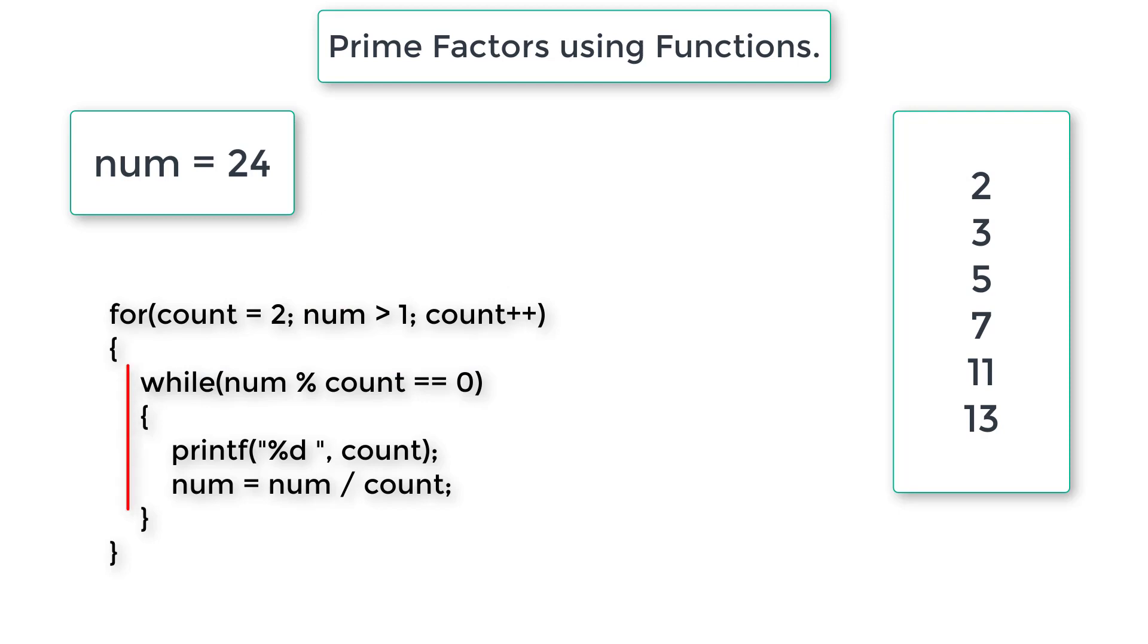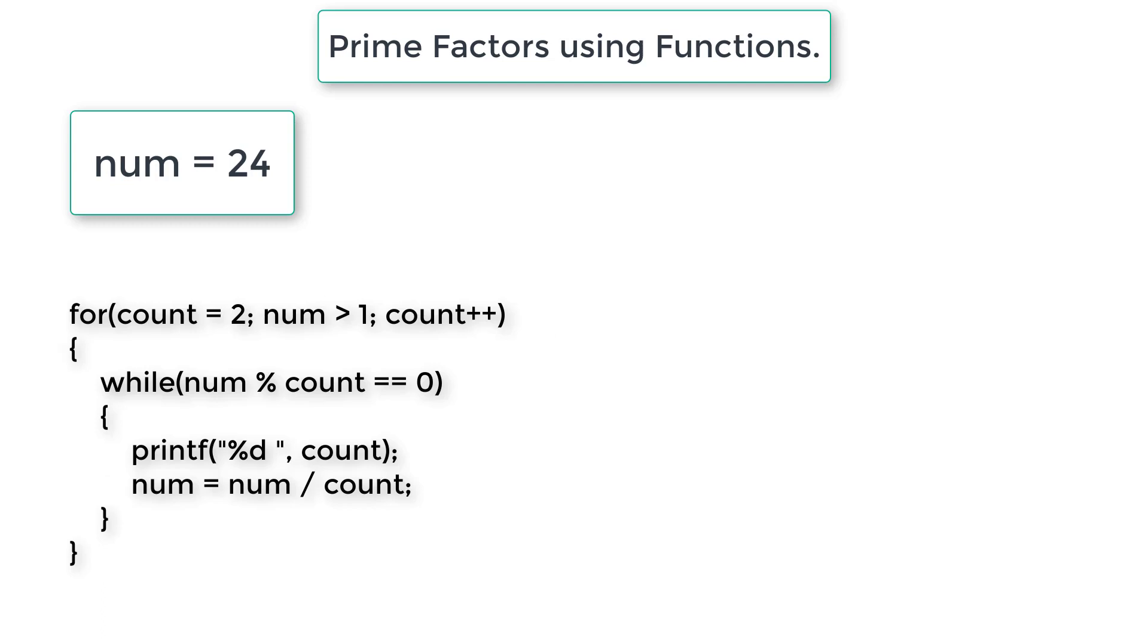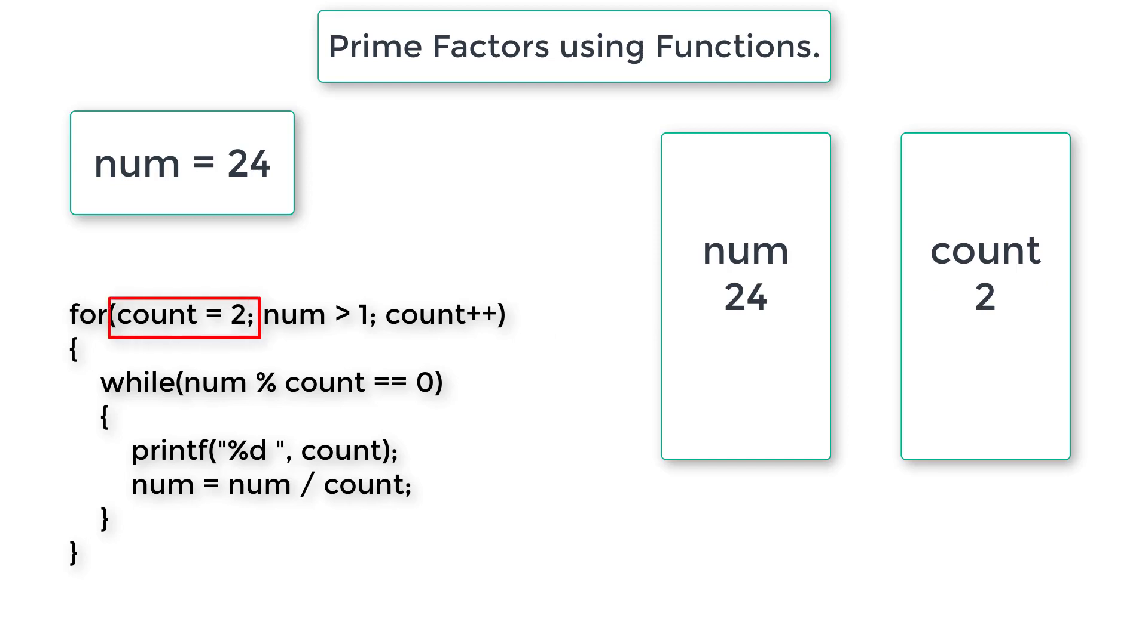We will start a count, loop counter by 2 which is smallest prime number. Let us check this logic, the while loop first. Our number is 24, modulo divide it by 2. Yes it divides so we print 2 and then divide 24 by 2. So num is 24, count is 2.